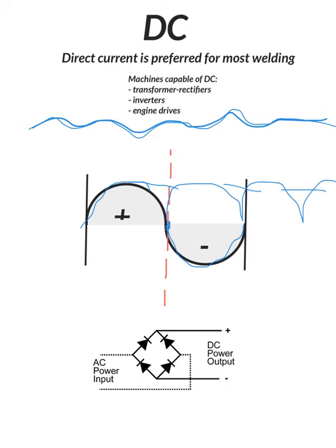That is DC. Again, transformer rectifiers, inverters, engine drives are capable of running DC electrode positive.